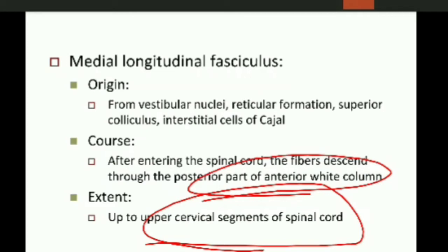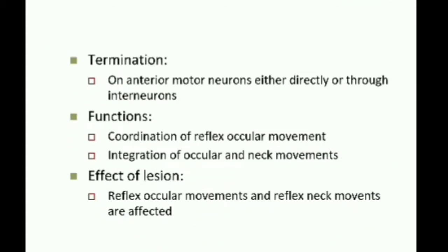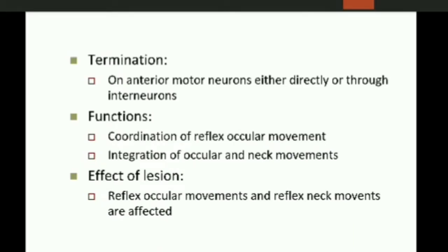Below this level, the fibers of this tract run along with the fibers of the anterior vestibulospinal tract. Regarding the extent of the tract, the fibers of this tract extend up to the upper cervical segments of the spinal cord only. The tract fibers terminate on the anterior motor neurons, either directly or through interneurons.